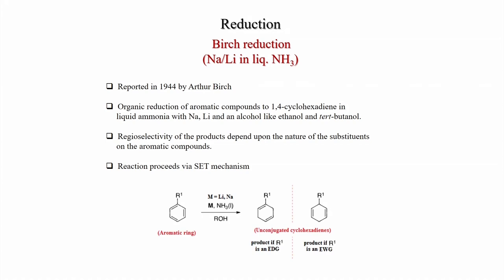For a substituted aromatic ring treated with sodium or lithium metal in liquid ammonia with a proton source like alcohol, you get an unconjugated cyclohexadiene. When R1 is an electron-donating group, the double bond remains with the carbon bearing R1. When R1 is an electron-withdrawing group, the cyclohexadiene system has a saturated carbon bearing R1.